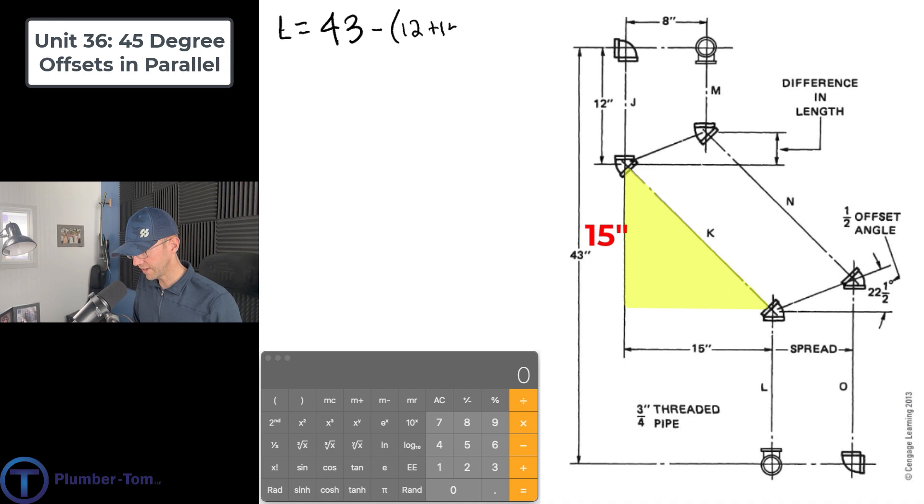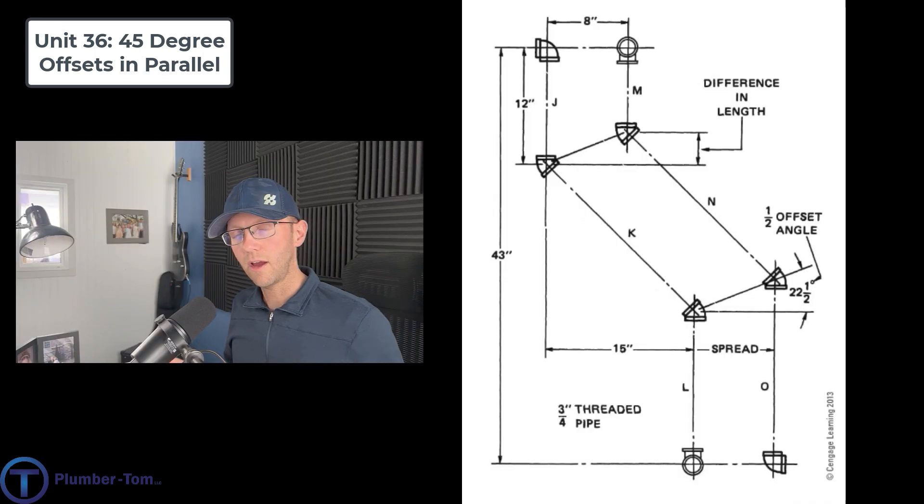So I'm going to put 15 in there, right? L equals 43 minus 12 plus 15 is going to be 27. So L equals 16. All right, we have successfully figured out the offset, the first line.